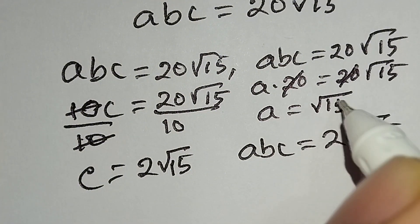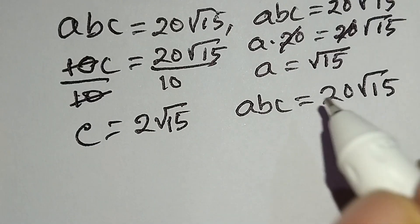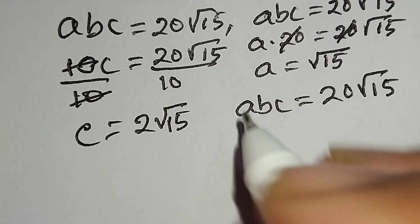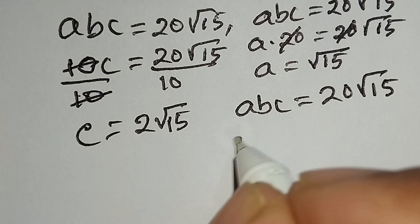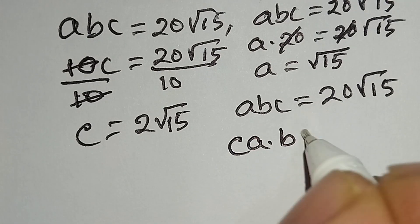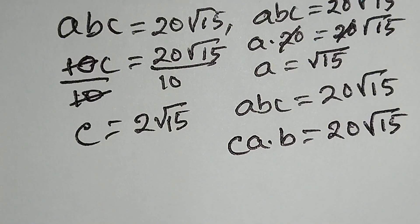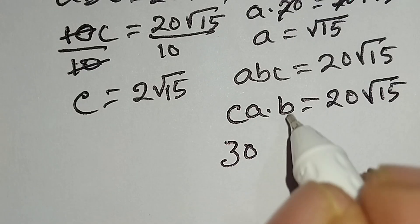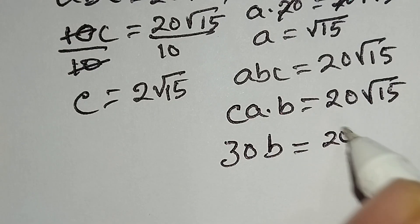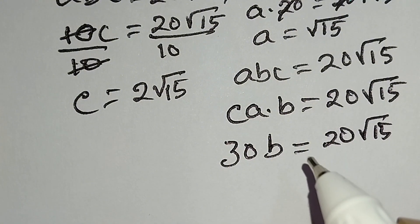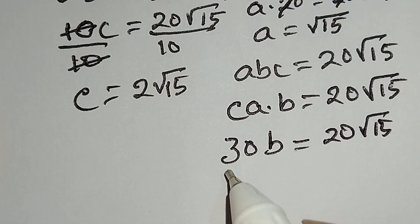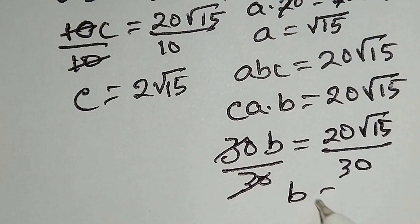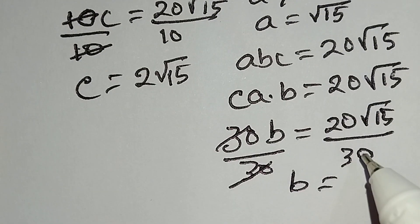From equation number three, CA equals 30. So we can write 30 times b equals 20√15. Dividing both sides by 30, the 30s cancel out, so b is equal to 20 over 30, which simplifies to 2√15 over 3.